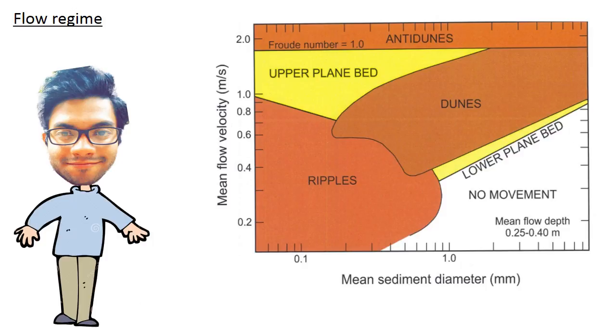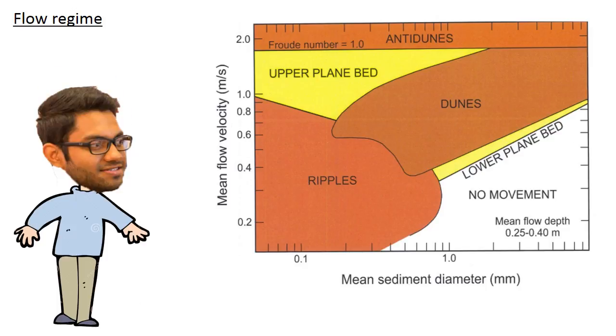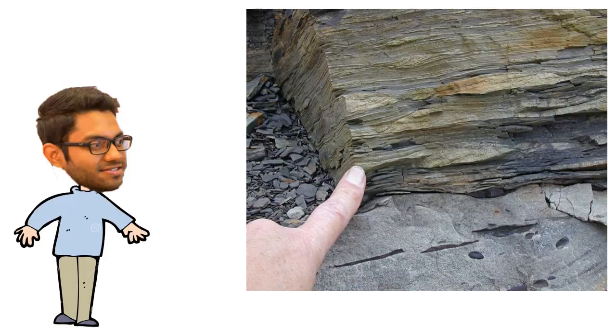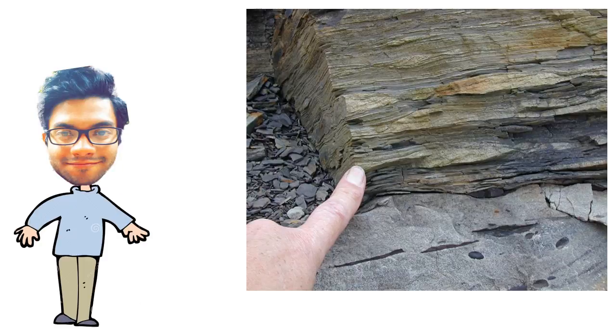While flasor beds usually form in tidal environments, we can also expect to see them in fluvial conditions. Individual sand ripples are created, which are later infilled by mud during quieter flow periods. These mud drapes are typically a minor constituent of the deposits. The structure tells us that flasor beddings form in high energy environments. I am now going to pass on to Kami, who is going to be talking about lenticular bedding.